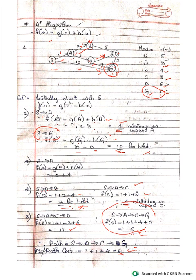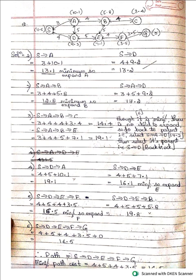This is the A* algorithm — a very important algorithm. Now let's go through one more problem. Here, the heuristic values are written above each node. A is 10.1, D is 9.2, S is 11.5, E is 7.1, and G is 0, which means G is the goal node.